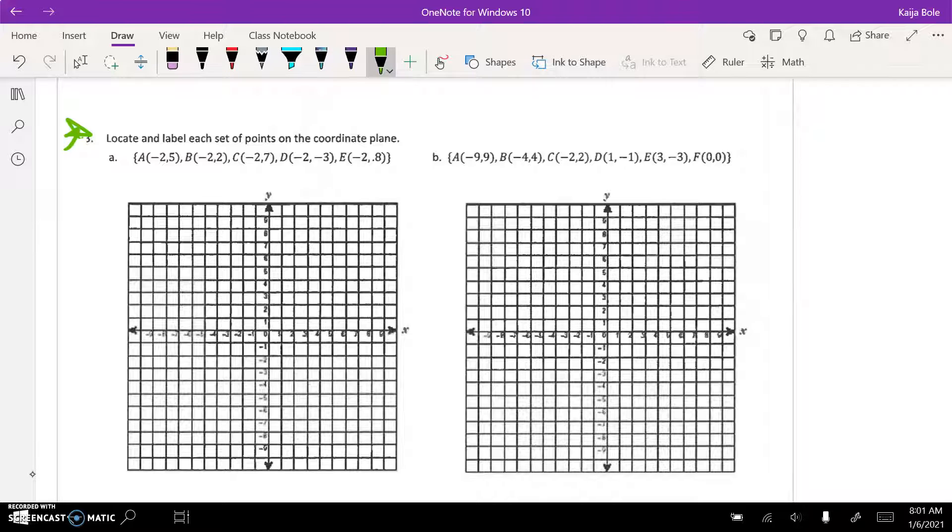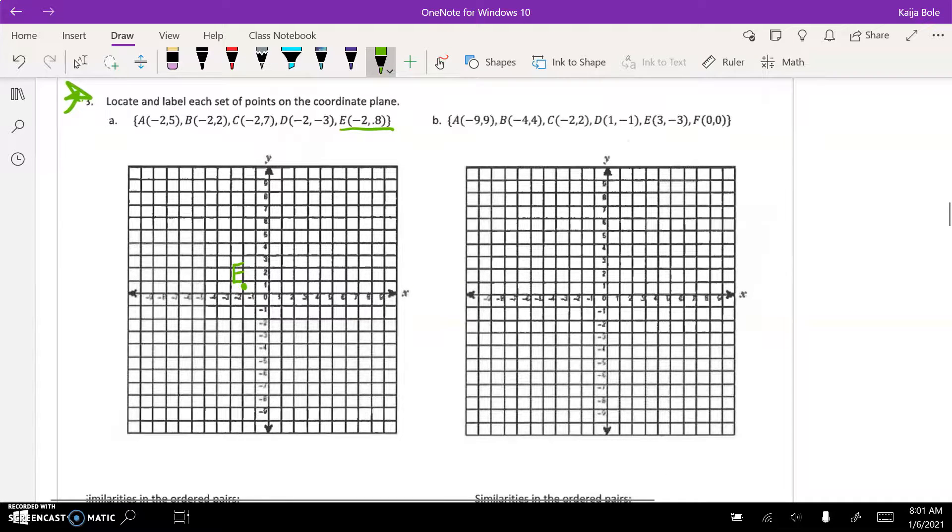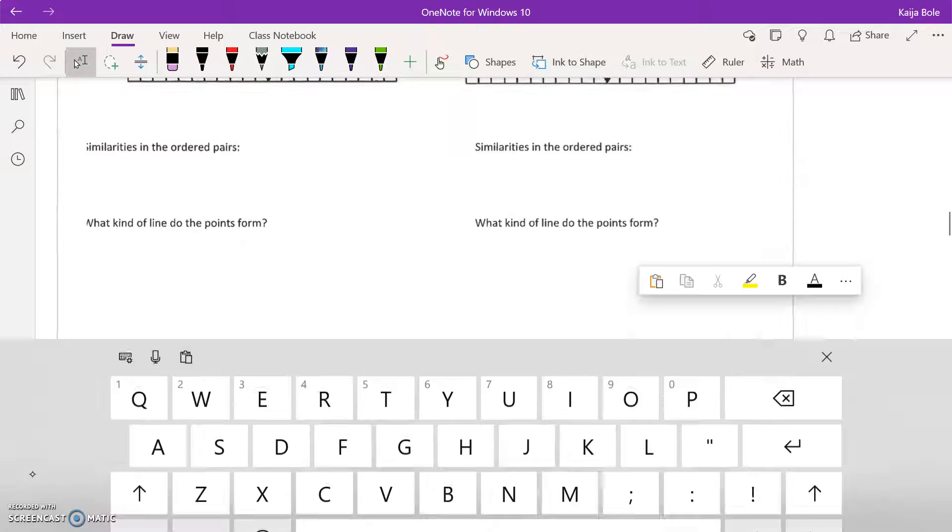Okay, the one question to pay attention to is like in part a here, point e, negative 2.8. So over to negative 2.8 would be just below the one, so that would be point e there where I marked it in the green.